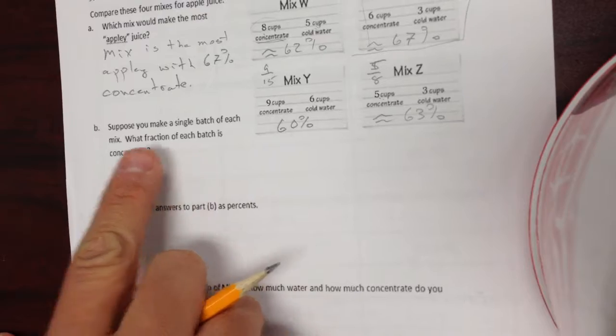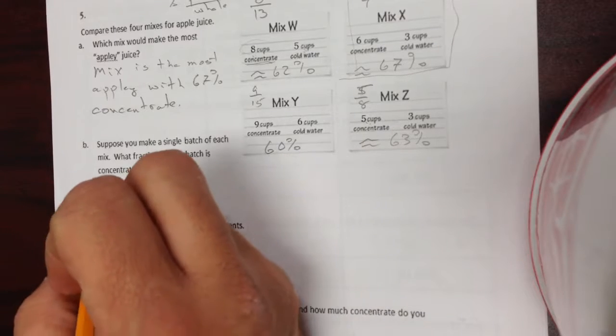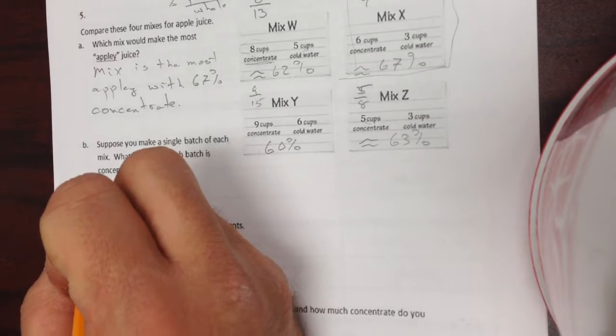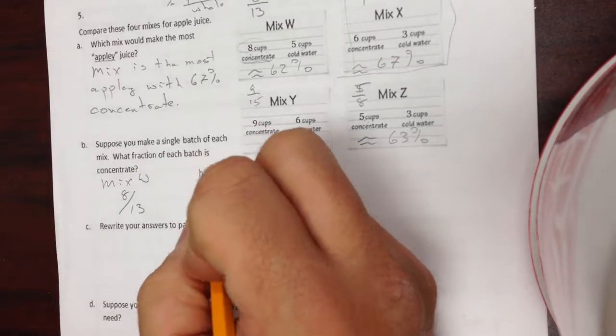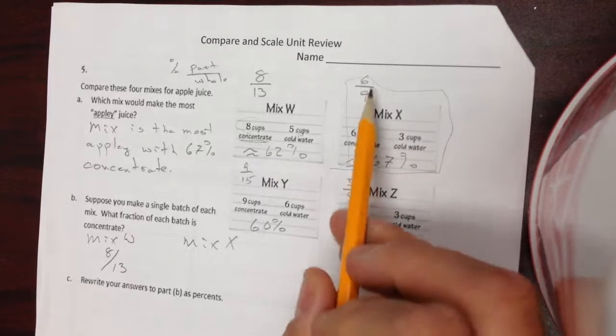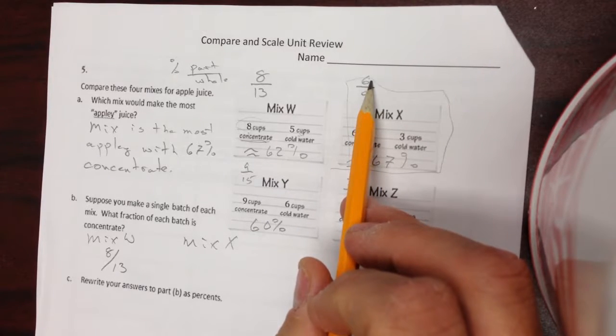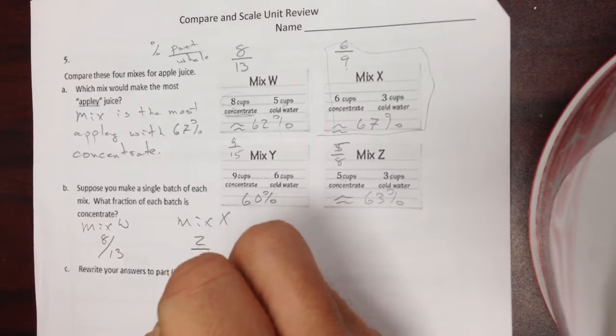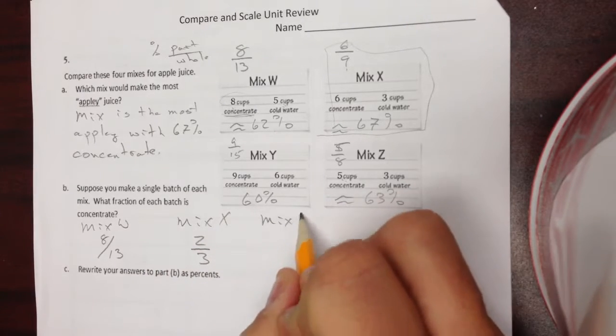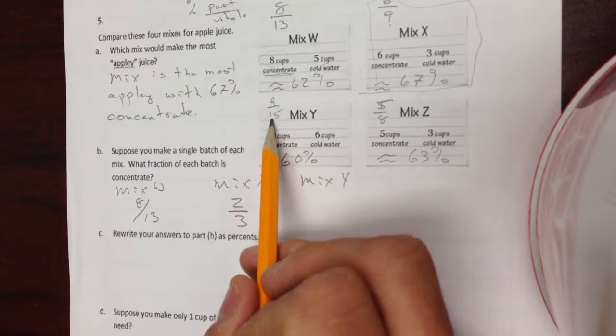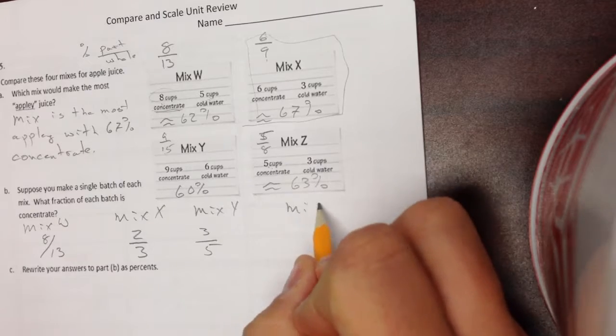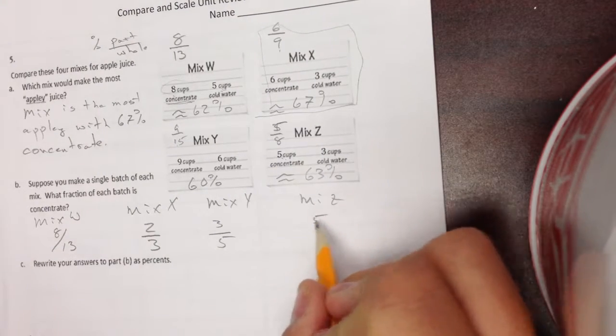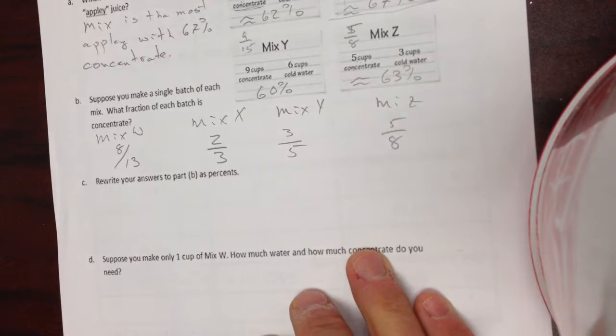Okay, if you make a single batch, what fraction of the batch is concentrate? I already did all the fractions. So, Mix-W is 8 thirteenths. Mix-X is 6 ninths. But let's reduce. 3 goes into both of these. Mix-X is 2 thirds. Mix-Y, 9 fifteenths. 3 goes into both of those. 3 fifths. Mix-Z, 5 eighths.